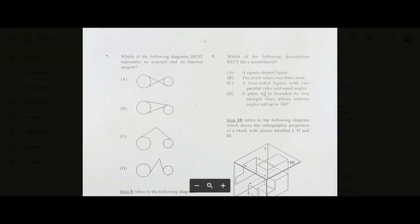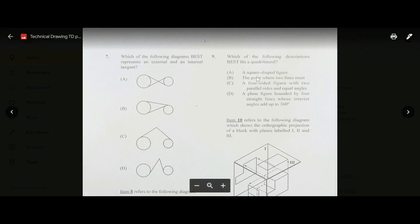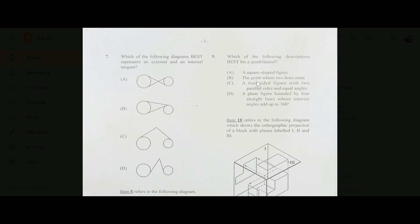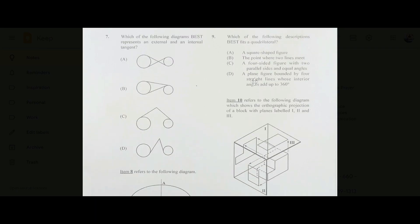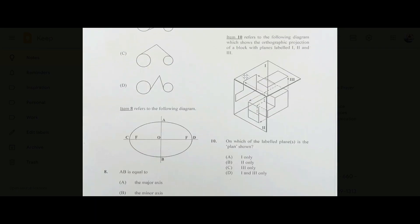Number nine: which description best fits a quadrilateral? The answer is D — a plane figure bounded by four straight lines whose interior angles add up to 360 degrees. Number ten: on which labeled plane is the plan shown? We know the plan is the view from above, so the plan would be on plane number three. The answer is C, three only.